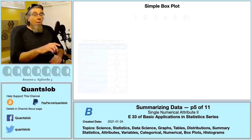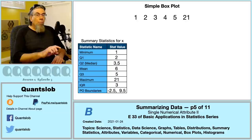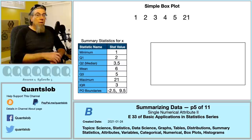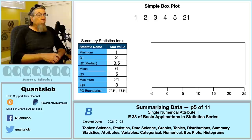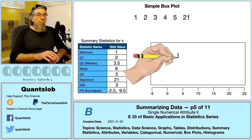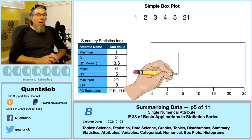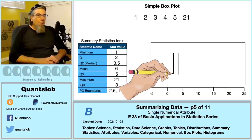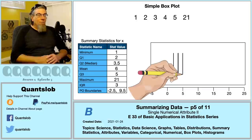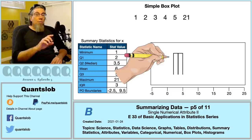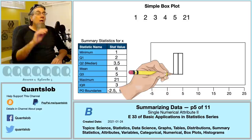Now let's make a box plot — a horizontal one. We start by drawing the plotting region and placing the x-axis just below it. We make sure the x-axis contains our domain of values, going from −5 to 25 with ticks at intervals of five. We start by drawing a thick vertical line segment at the median Q2 (value 3.5), then slightly thinner line segments at Q1 (value 2) and Q3 (value 5). We complete the box by drawing the top and bottom edges.